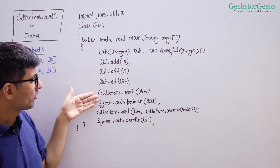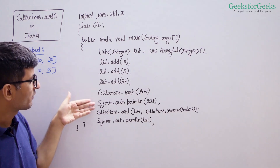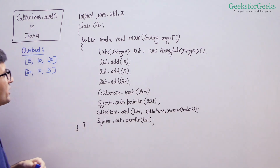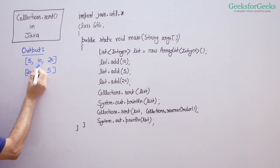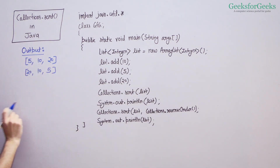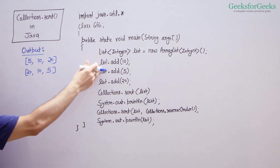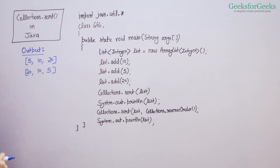We added three items and sorted the list. After sorting, we are printing it. We are going to get 5, 10, 20, which is the natural order of these integers.